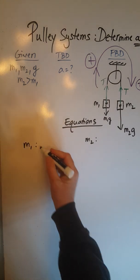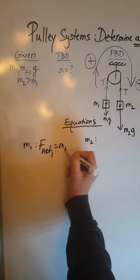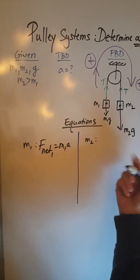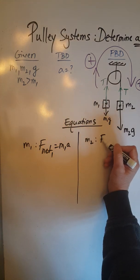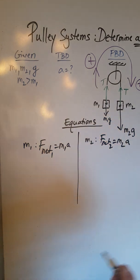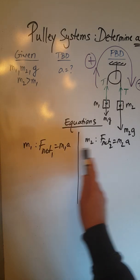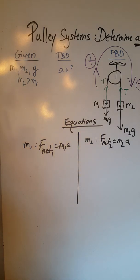So for M1 we are going to have F net one equals M1A, and for M2 we are going to have F net two equals M2A. So now we are going to develop these equations remembering that F net is in fact the vector sum of all the forces.